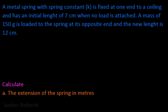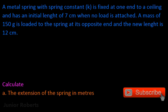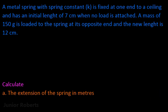Junior Roberts here, doing another CSEC physics worked example. This question says a metal spring with spring constant k is fixed at one end to a ceiling and has an initial length of seven centimeters when no load is attached. A mass of 150 grams is loaded to the spring at its opposite end and the new length is now 12 centimeters.